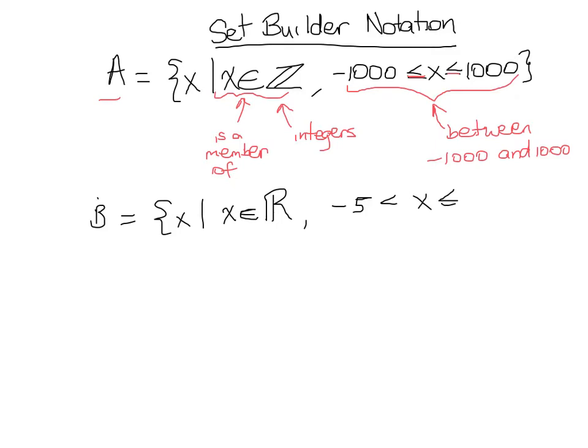And for a little variety sake, let's have one sign less than and the other sign less than or equal to. In this case, real numbers between negative 5 and 5.